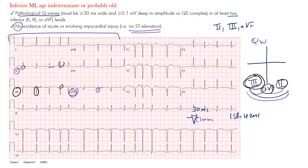This is an inferior MI. We're looking for pathological Q waves — they should be at least 30 milliseconds wide and 0.1 millivolts deep in amplitude, or one millimeter. You have to confirm you're finding actual Q waves. So if this is a P wave...